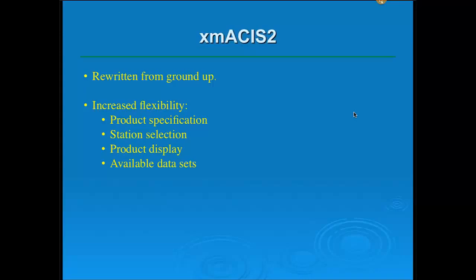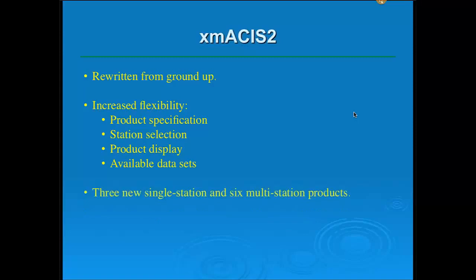We have also added quite a few data sets that weren't in ACES before — things like CoCoRaHS, SNOTEL, RAWS, and the CRN to name a few. And we have added some new products. There are three brand-new single-station products and six multi-station products in XMASIS II. We also enhanced many of the existing products, so they should be a lot more useful now.